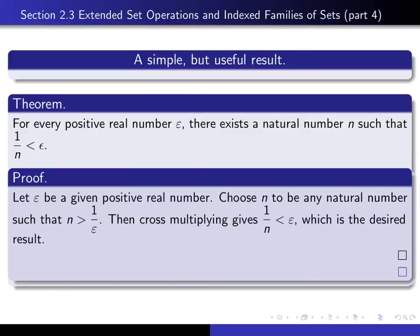Well, the idea of the proof is to, instead of looking at epsilon, you should look at the number 1 over epsilon. Because proving that 1 over n is smaller than epsilon is the same as proving that n is bigger than 1 over epsilon.